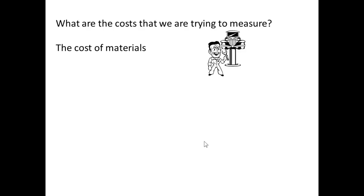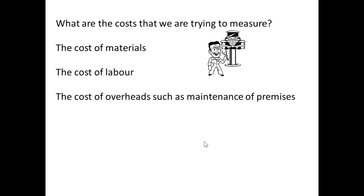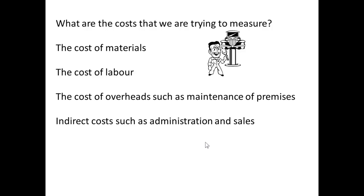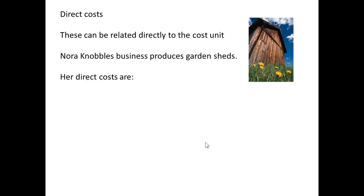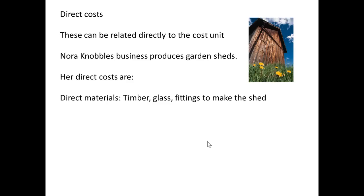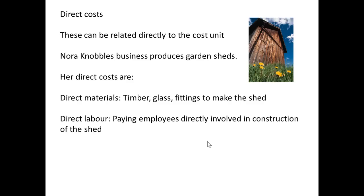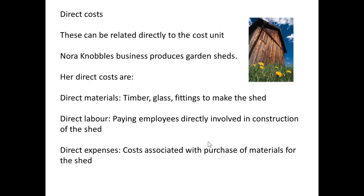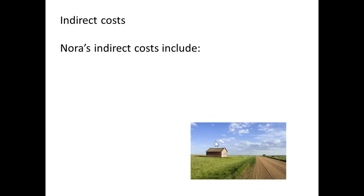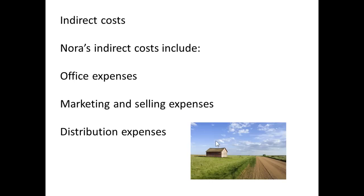What are the costs we are trying to measure? We want to measure the cost of materials, the cost of labour, and the cost of overhead such as maintenance of the premises. We want to measure indirect costs such as administration and sales, and direct costs for the cost unit — the costs we can attribute directly to those cost units. For example, Nora Nobles produces garden sheds. Her direct costs include materials — timber, glass, fittings — labour employed solely for assembling and constructing the shed, and direct expenses associated with purchasing materials. Her indirect costs include office expenses, marketing and selling expenses, and distribution expenses.